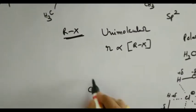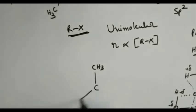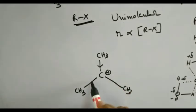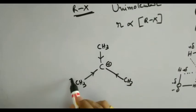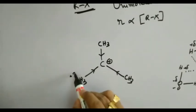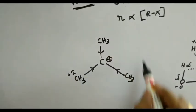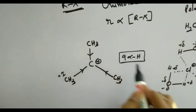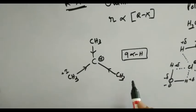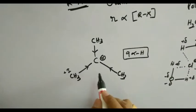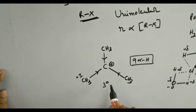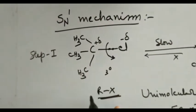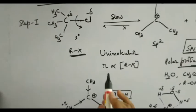Another salient feature is that the carbocation intermediate generated in step 1 is also stabilized due to hyperconjugation and inductive effect. All methyl groups — all alkyl groups — are +I (positive inductive) in nature; as a result, they decrease the positive charge, stabilizing the species. Here we have 9 alpha hydrogens, so we can write 9 no-bond resonance or 9 hyperconjugative structures for this carbocation. Because the tertiary carbocation is highly stabilized by hyperconjugation and resonance, tertiary alkyl halides prefer SN1 mechanism.